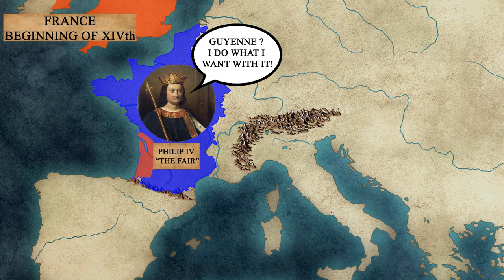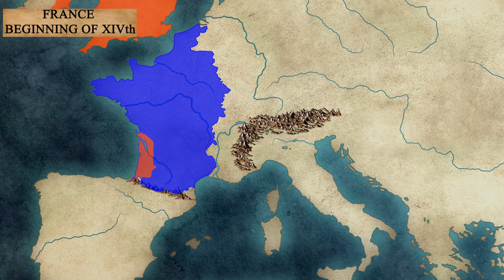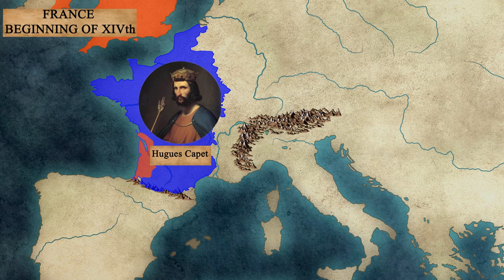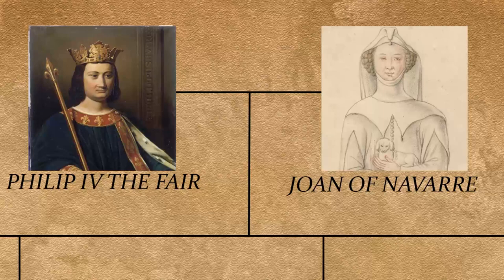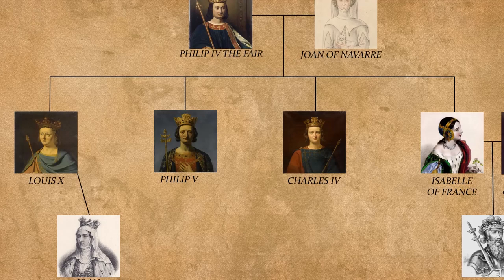To this territorial rivalry was added an unprecedented succession crisis for the Kingdom of France. Since the advent of Hugh Capet, who founded the Capetian dynasty, the King had always had a son to succeed him — historians speak of the Capetian miracle. The Capetian monarchy was initially elective, and the principle of heredity of the crown gradually entered customs so that after Philip Augustus, the Kings of France were no longer crowned during their father's lifetime. At the beginning of the 14th century, the King of France was Philip the Fair. He had three sons — Louis the Quarrelsome, Philip the Tall, and Charles the Fair — and a daughter, Isabelle. The succession of the Iron King seemed assured.